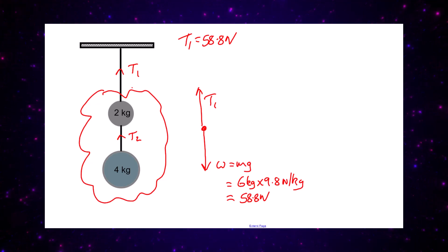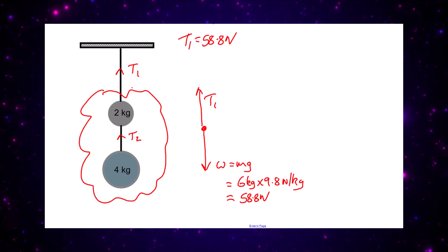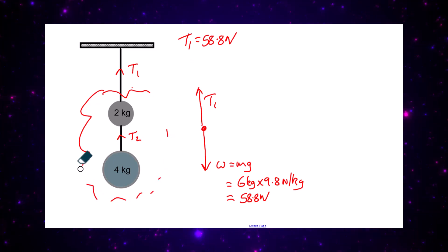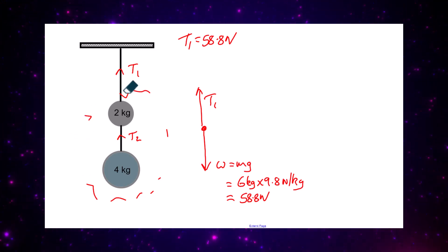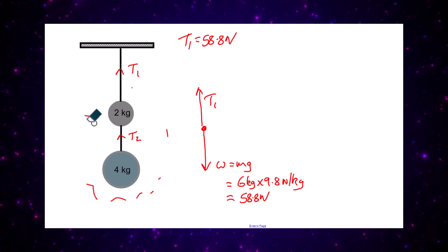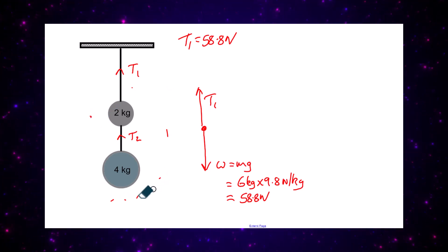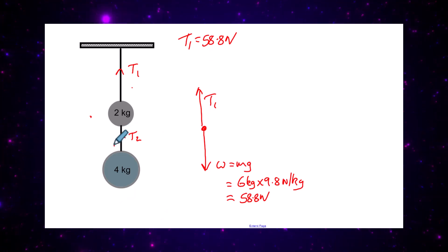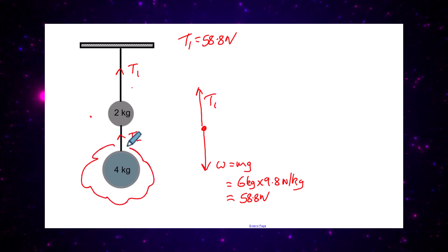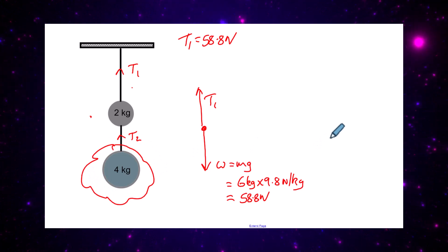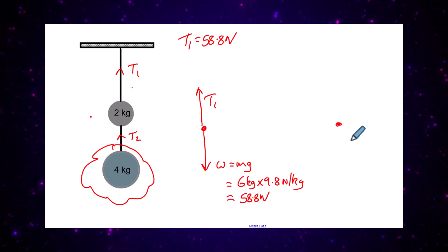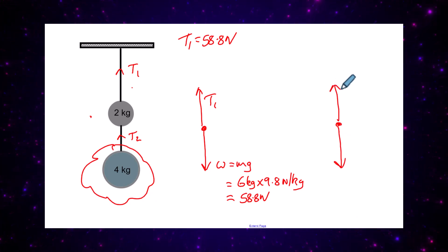But what about tension T2? Well we do the exact same thing again. Rather than putting a bubble around all the rest of the balls, we would just put it around the bottom ball and take everything below tension T2. You just have one mass below the tension T2, so we could draw out for the four kilogram mass: it's going to have a weight acting downward and a tension T2 acting upward.